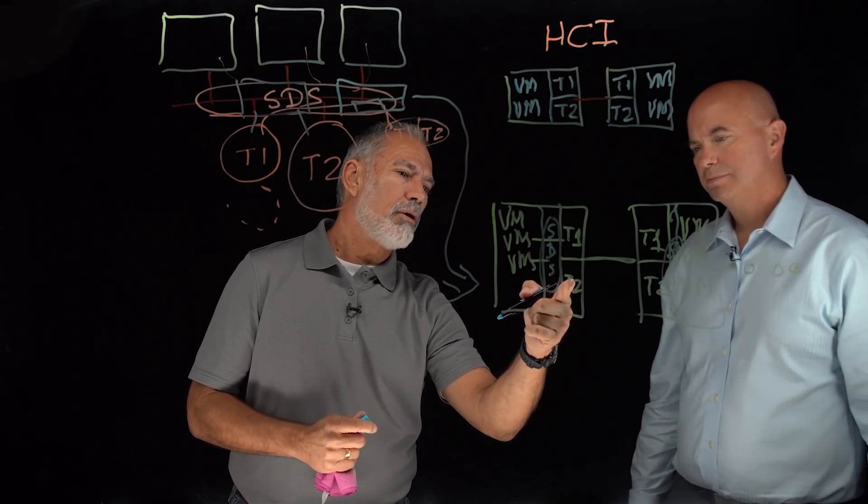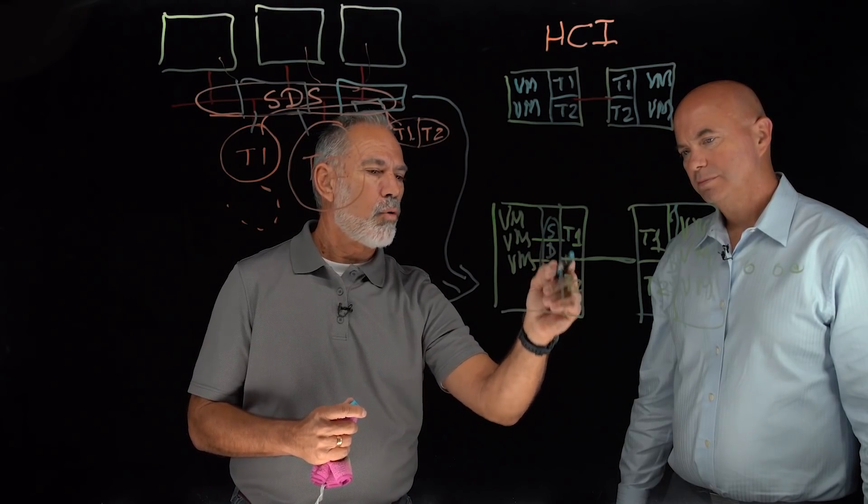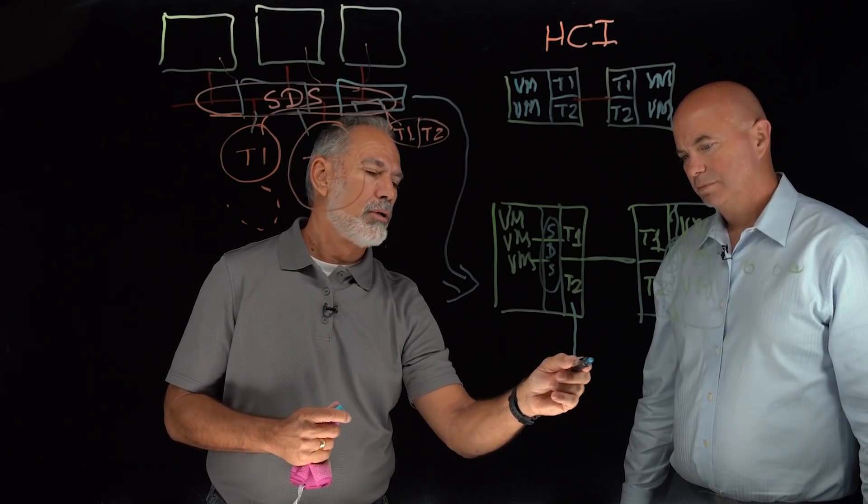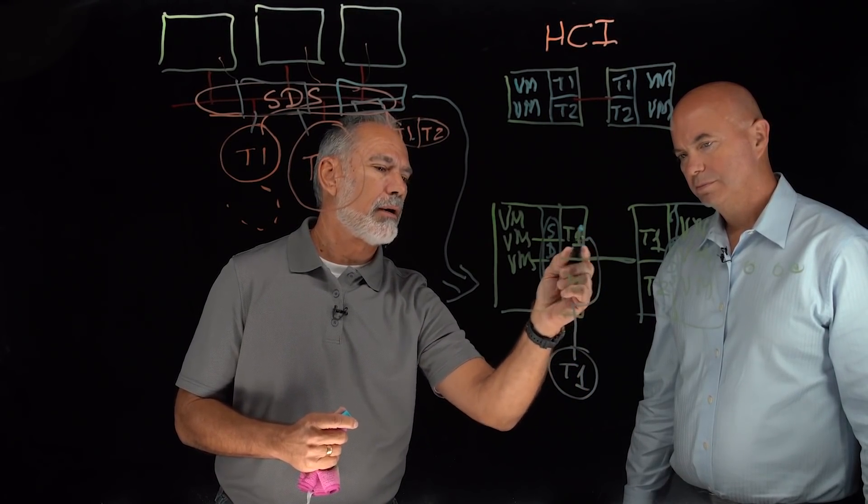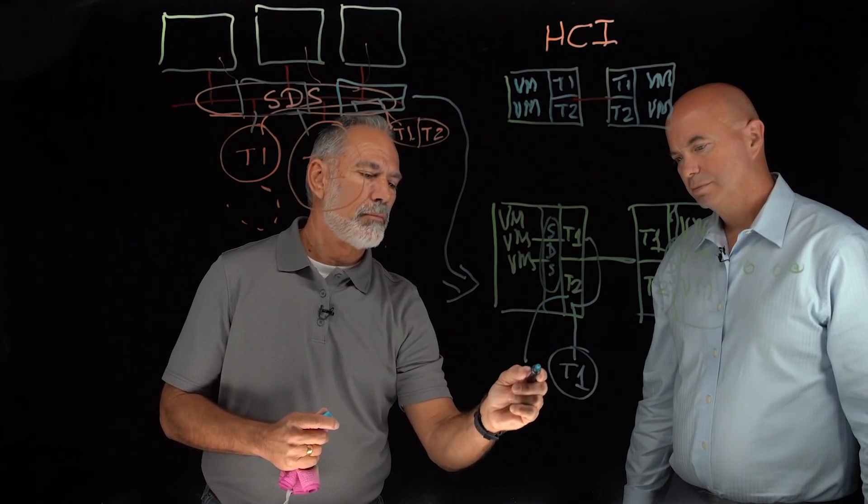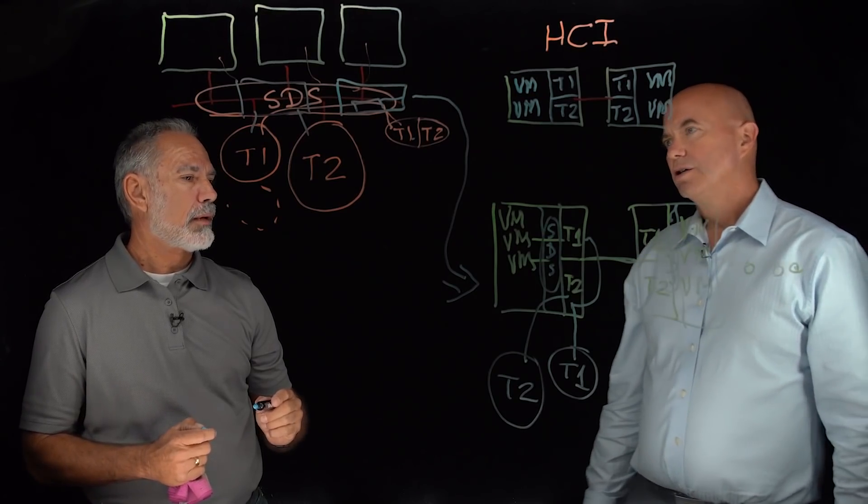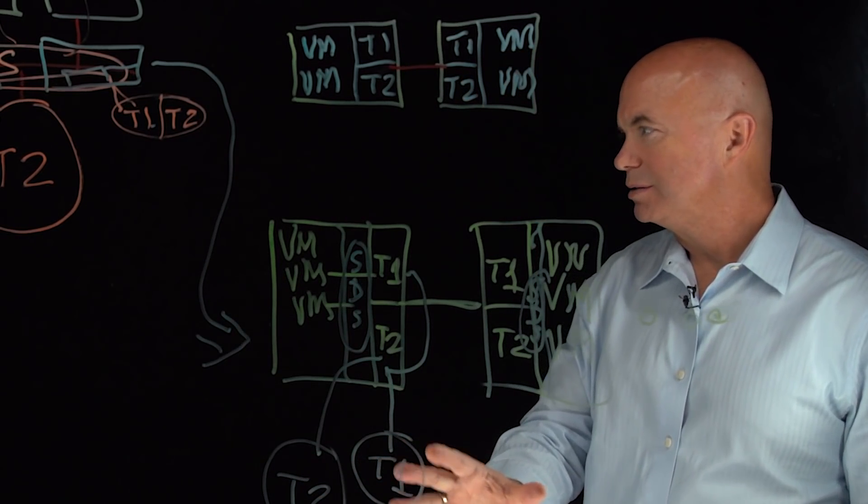But what we've done also is we now have the opportunity rather than having to acquire new resources here, we can actually draw these externally. So that may have been initially the T1 that was out here. And this T2 might have been the original tier two external storage that we had. So that way I can leverage that existing investment into my HCI environment. Exactly.